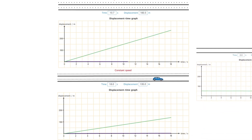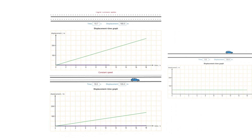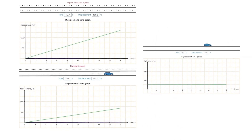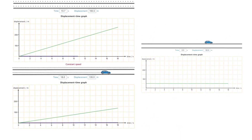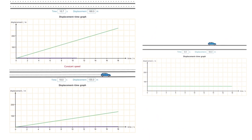Let's compare it with the third displacement-time graph. You can see the displacement-time graph on the right-hand side is a horizontal line. The time is passing but the displacement remains the same, so this graph is showing that the car is stopped.